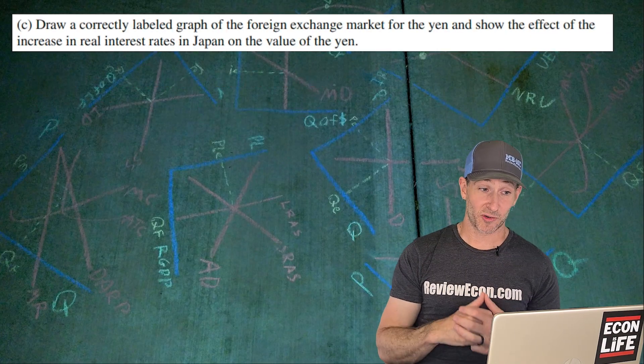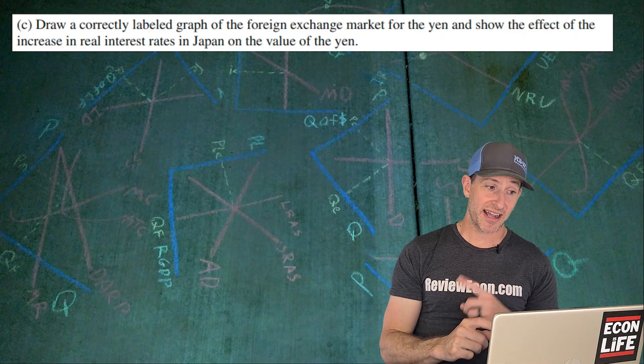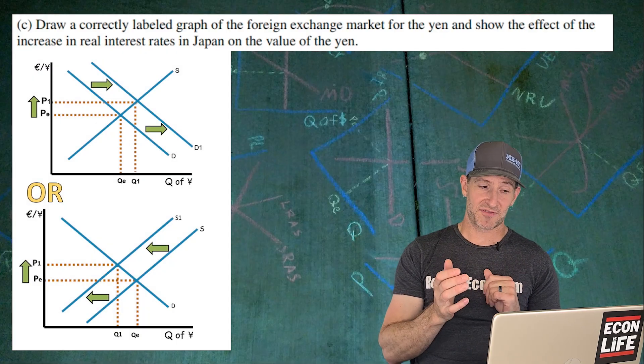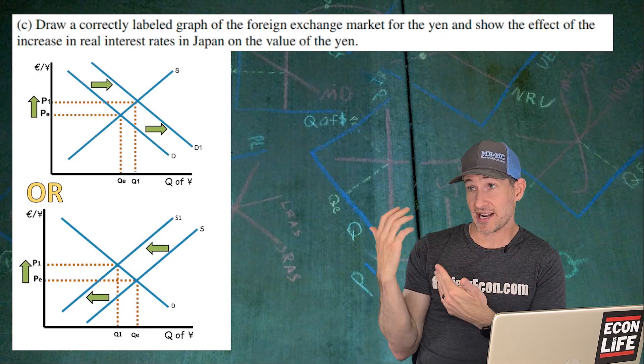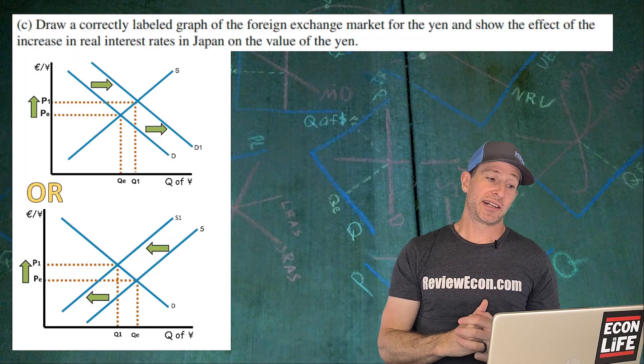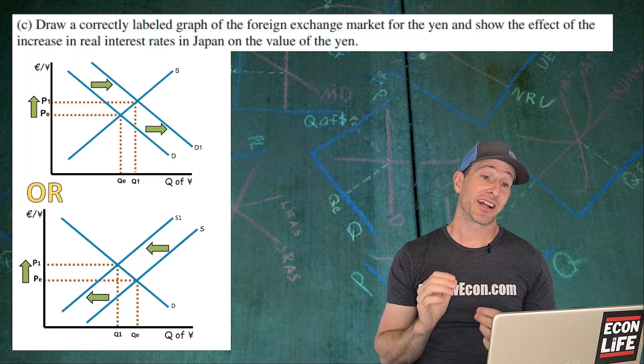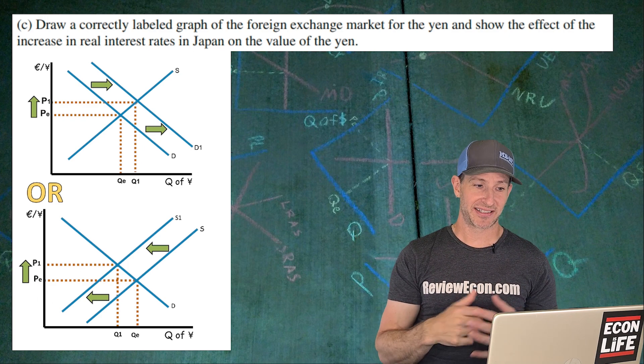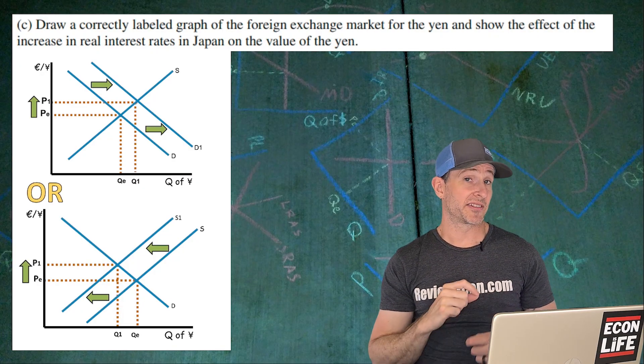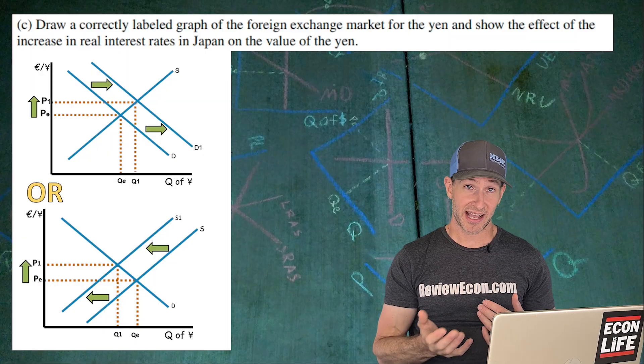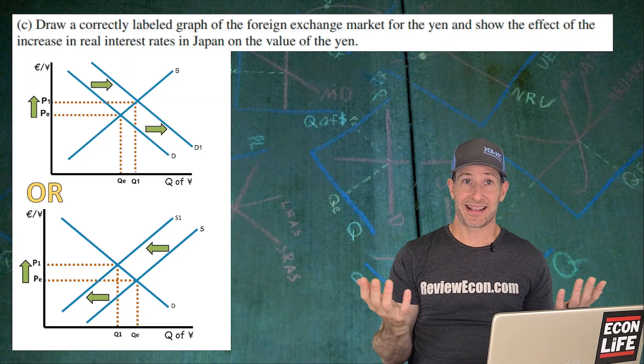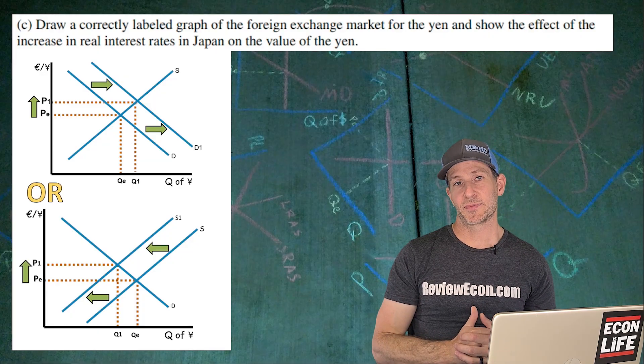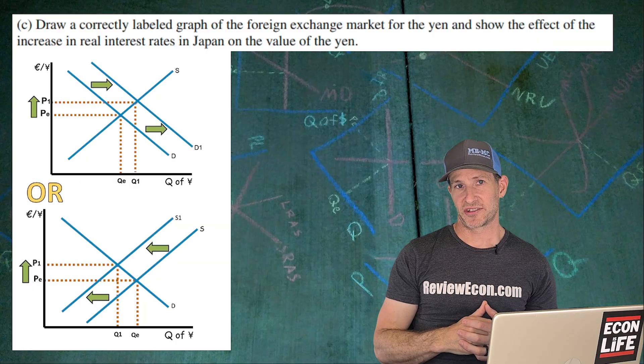Next we're going to draw a graph of the foreign exchange market for the yen and show the effect of the increase in real interest rates in Japan on the value of that yen. I think either one of these graphs are going to be acceptable, or you could do a double shift. We're going to remember money flows to the place with the higher interest rate. Money is going to flow into Japan. So we're going to see an increase in the demand for Japanese yen. You could also see a decrease in the supply of Japanese yen, because if you already have Japanese yen, you'll be less likely to sell them because you're seeking that high interest rate. Either one of those shifts I expect will be okay, and possibly a combination of the two.